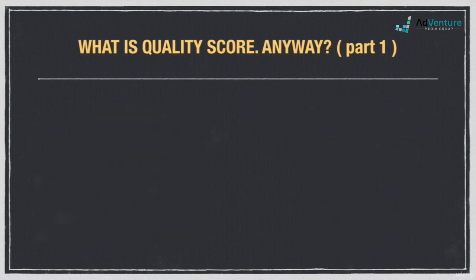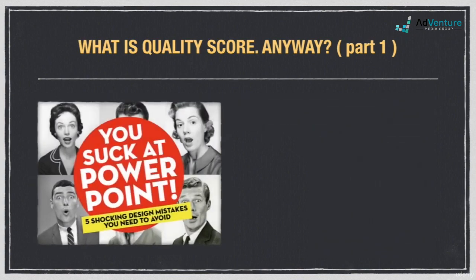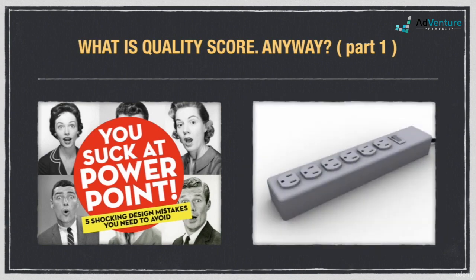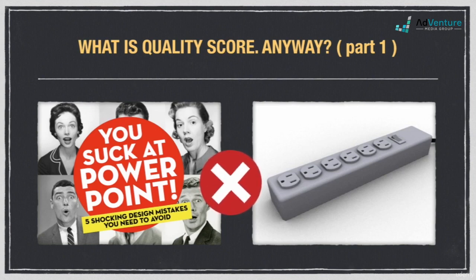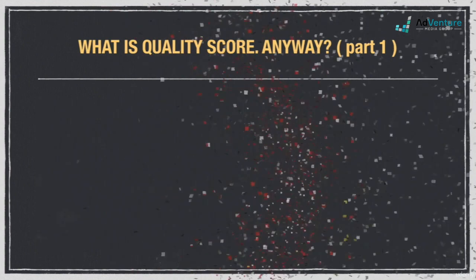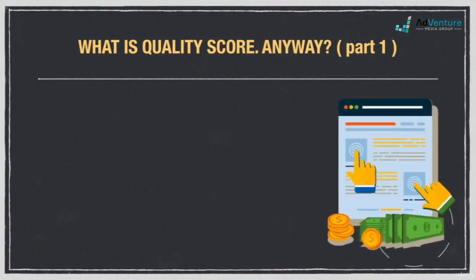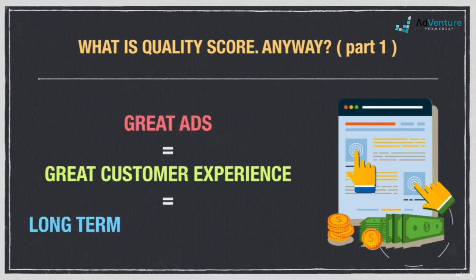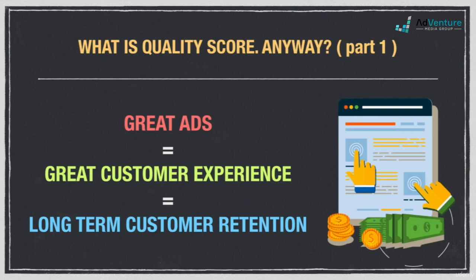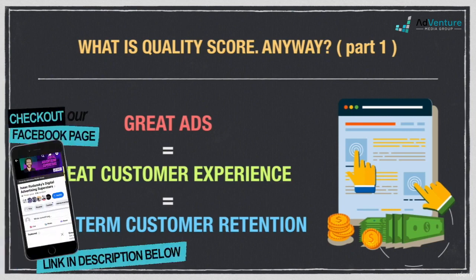If Google sent you to a website that offered PowerPoint tips when you were searching for somewhere to buy power strips, you might not use Google as frequently in the future, and worse, you might even begin using another search engine like Bing or Yahoo. It especially stands to reason, then, that Google also cares a great deal about this same sort of relevancy when it comes to the ads they show their users — ads shown above their organic search results, ads that are the bread and butter of their business model, accounting for more than 97% of their total revenue.